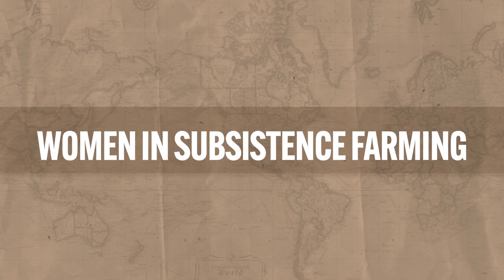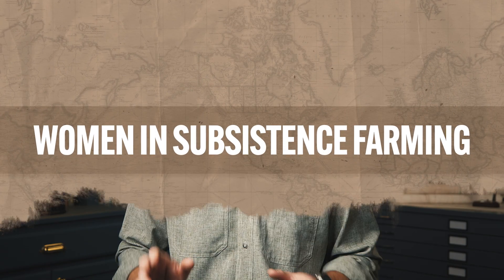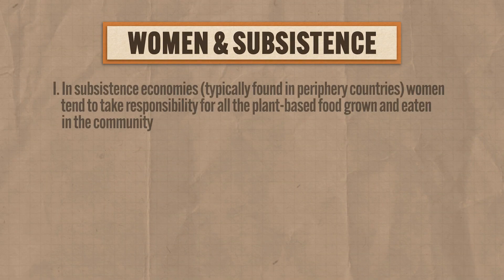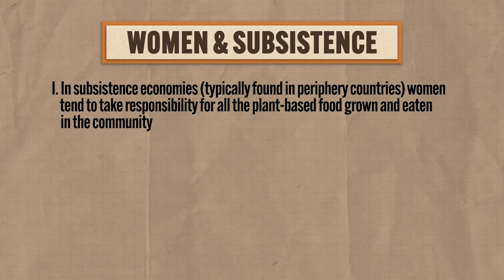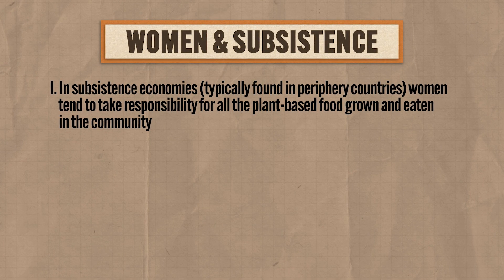Let's begin by considering women's roles in places characterized by subsistence agriculture. Everything I'm about to tell you is a generalization, and these facts can vary from place to place depending on the culture and a dozen other factors. In subsistence economies, which are typically found in periphery countries, women tend to take responsibility for all the plant-based food that is grown and eaten in the community. Among women participating in subsistence agriculture, their roles also vary by the kind of subsistence agriculture in which they engage.